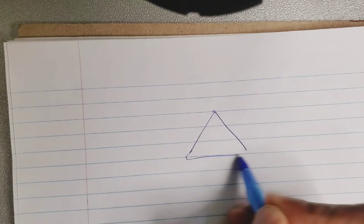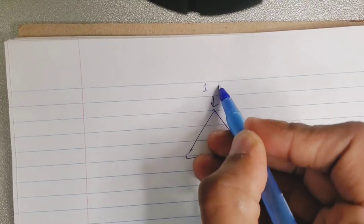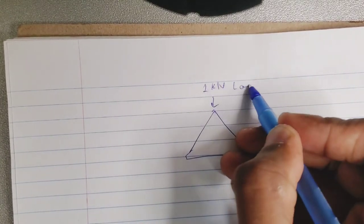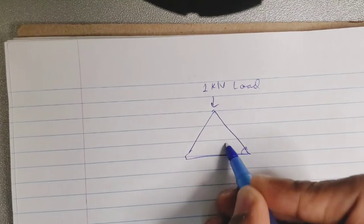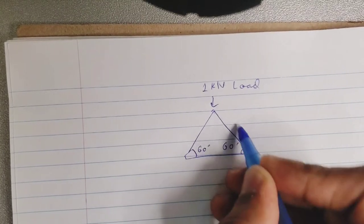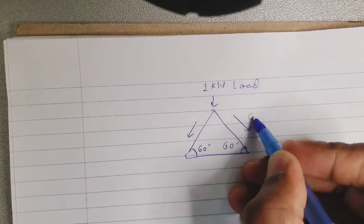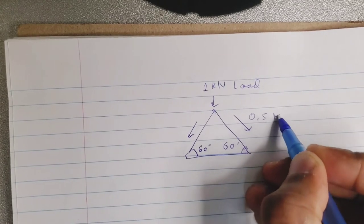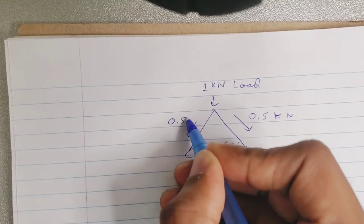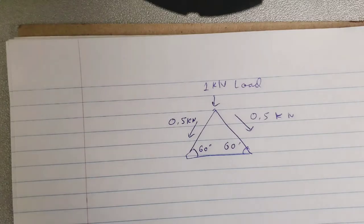The Warren Truss consists of alternatively inverted equilateral triangle-shaped spaces along its length. Due to this structure, each section is only subject to tension or compression forces, which helps to evenly distribute the loads applied.